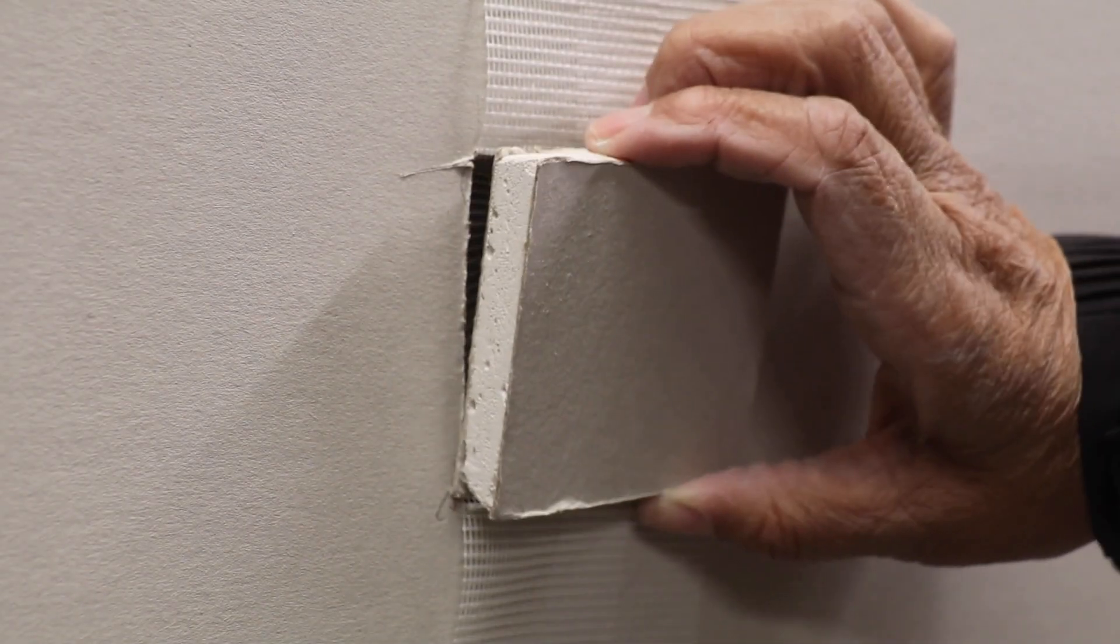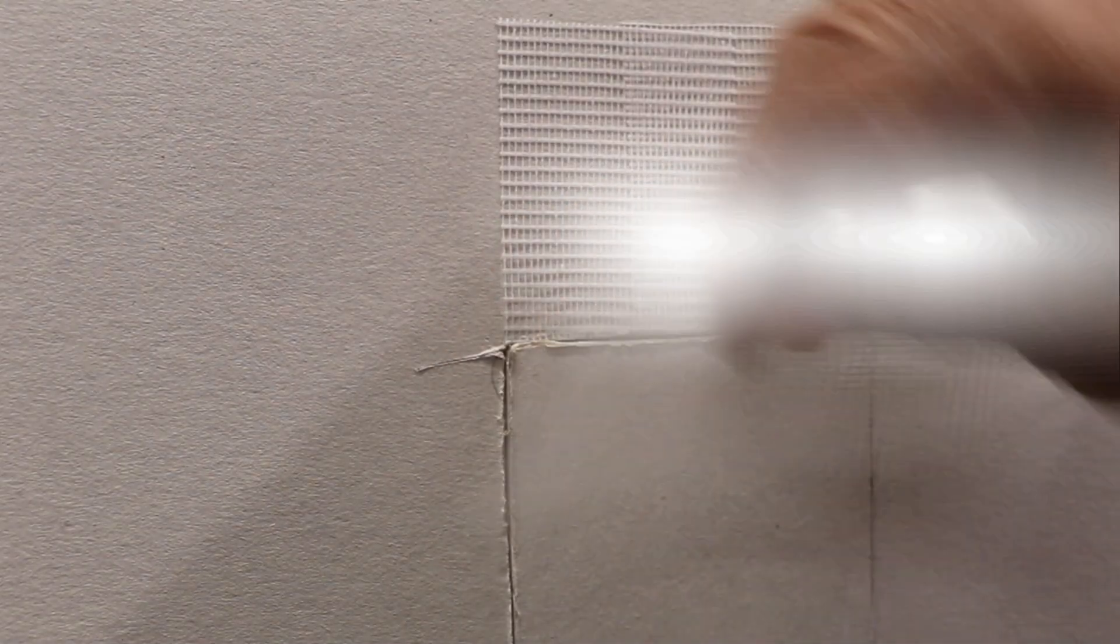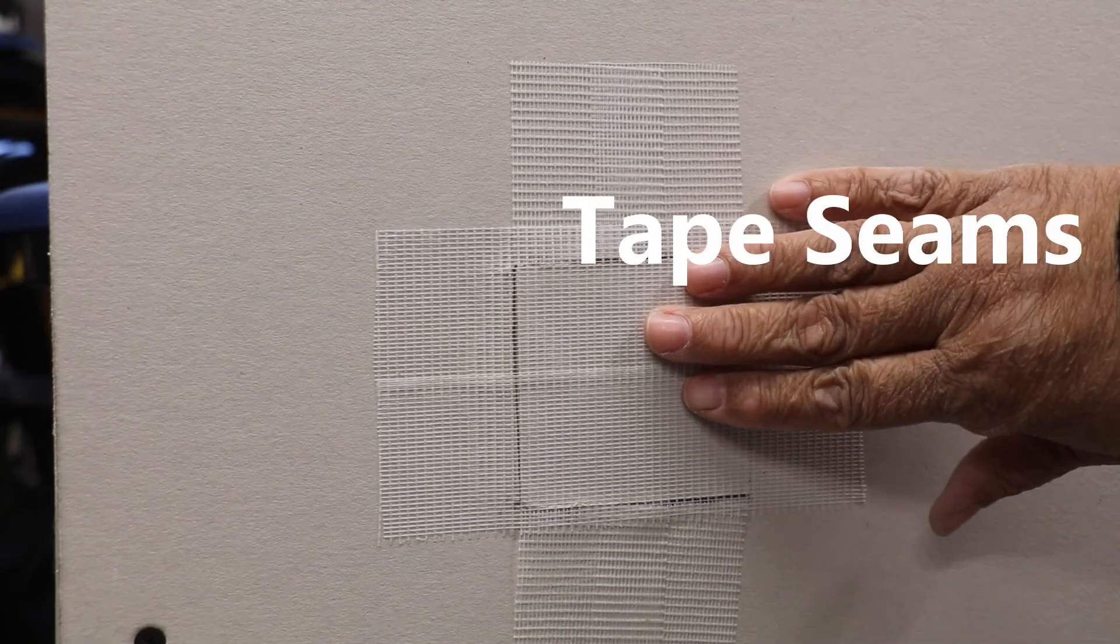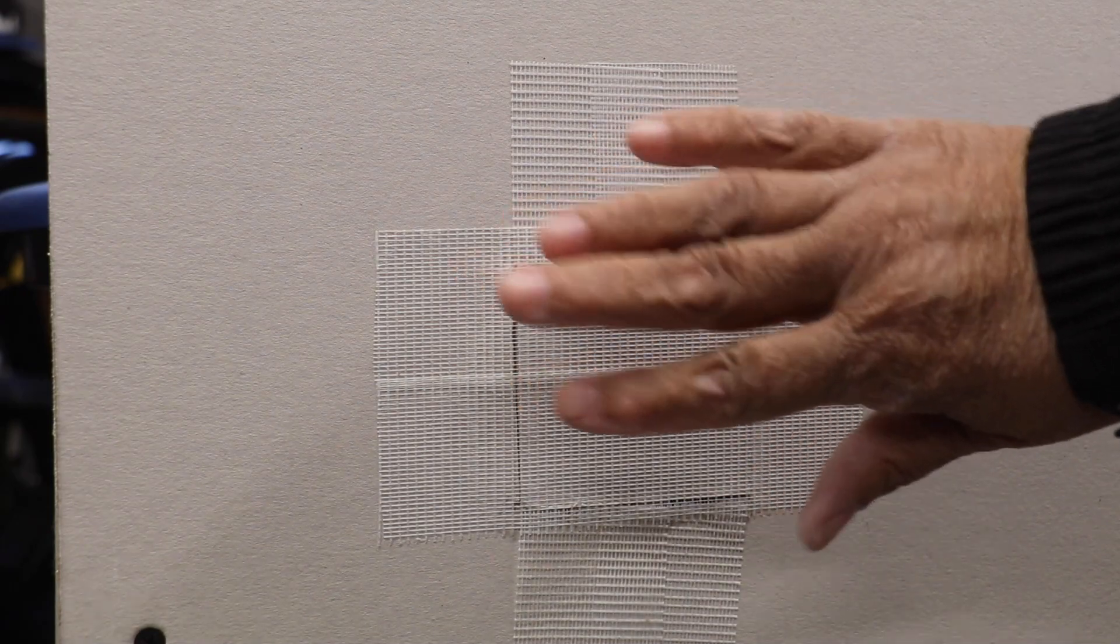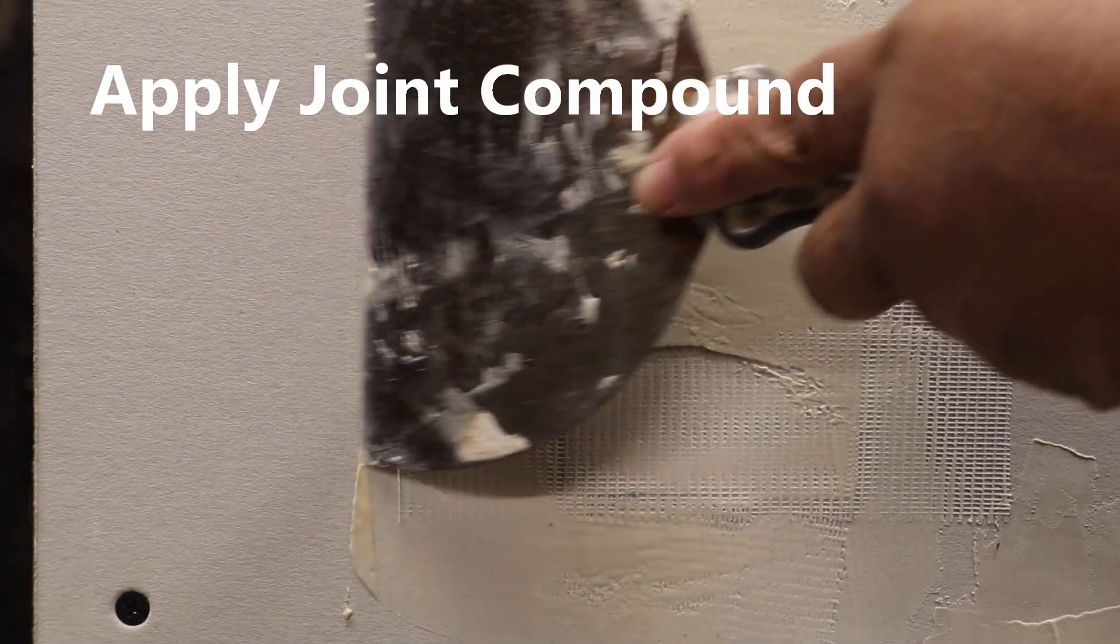Now it's time to insert our patch. Now I have to tape over the seams as well. So there we go. Our drywall is being held in place by our fiber tape. Now all we have to do is put it in place.